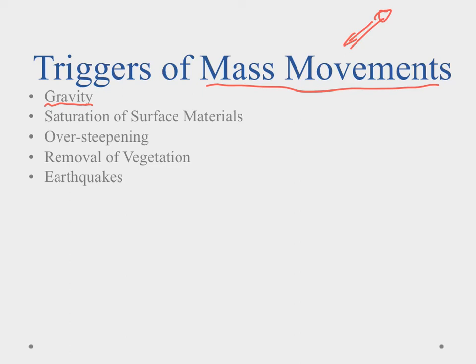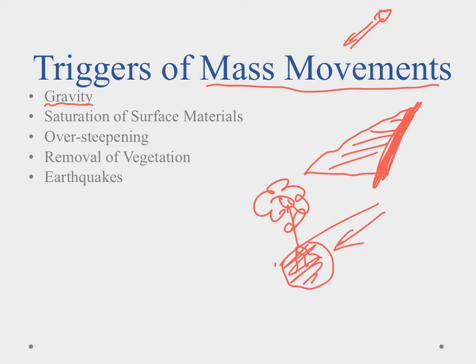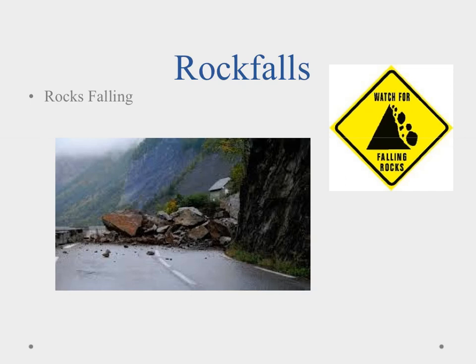Over-steepening can trigger mass movements — if you cut away part of a slope, it becomes steeper and more prone to movement. Removing vegetation is another trigger: plant roots hold clumps of soil together, so removing those plants means the soil can move more easily. Finally, earthquakes cause shaking that dislodges loose material and triggers mass movements.